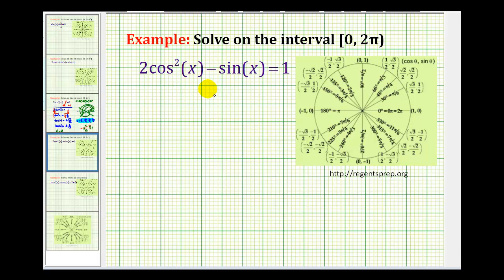We want to solve 2cos²(x) - sin(x) = 1 on the interval from 0 to 2π, closed on zero and open on 2π. So it includes zero radians and does not include 2π radians.